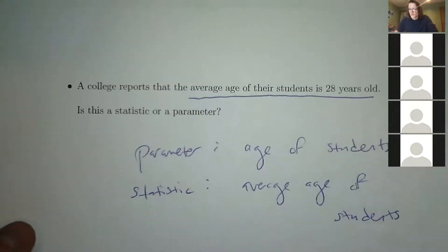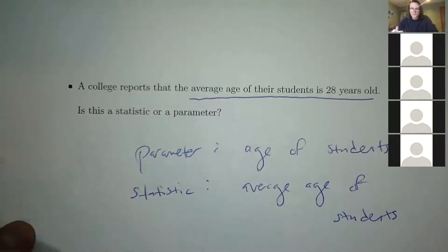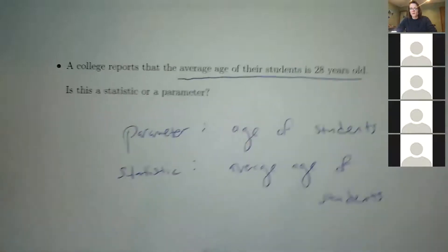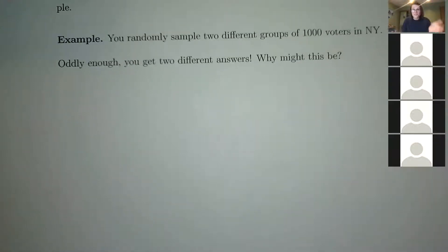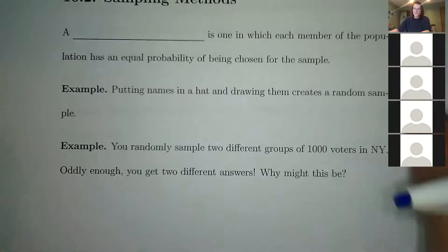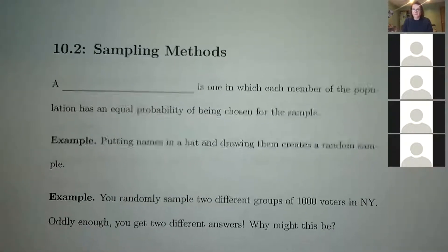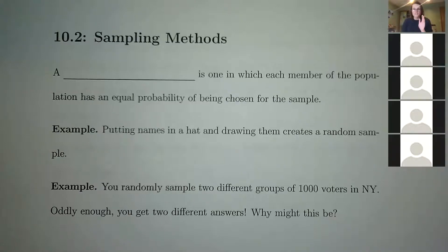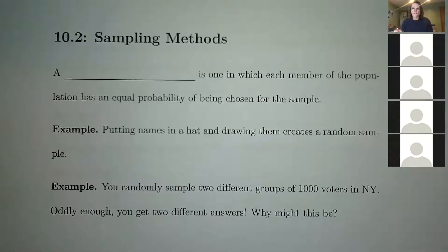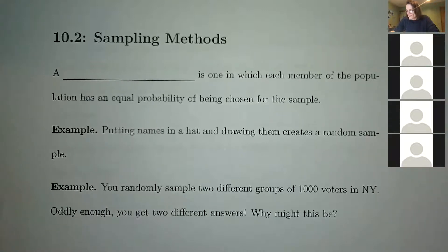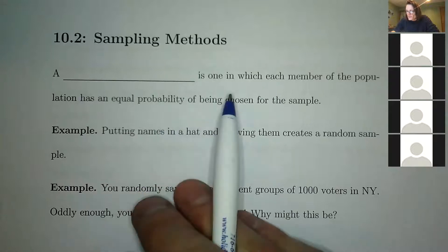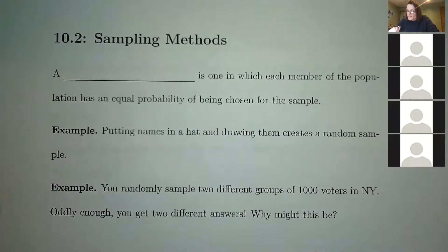Statistics as a subject is very different from the algebra-based math we've been doing. It's more wordy and definition-heavy — you need to learn definitions more than computations. Moving on to sampling methods: a random sample is one in which each member of the population has an equal probability of being chosen.